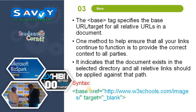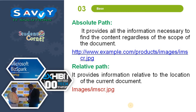The base tag specifies the base URL and target for all relative URLs in a document. It helps ensure that all your links continue to function by providing the correct context. It indicates that the document resides in the selected directory and all relative links should be applied against that path. There are two types of paths in web technologies: absolute path, which provides all information necessary to find the content regardless of the document scope, and relative path, where you only need to specify the image name.